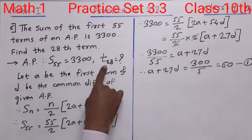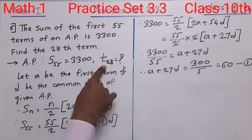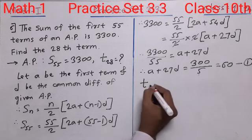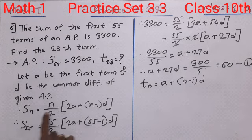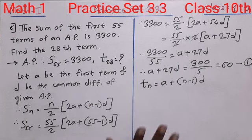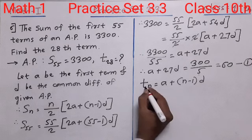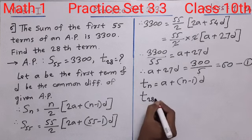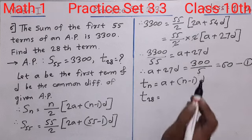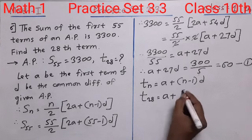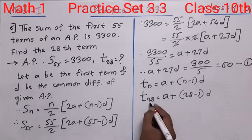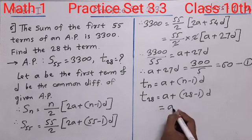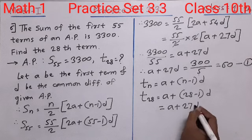Now we write the formula for TN to find T28. The formula for TN is A plus (N minus 1) into D. Substituting N = 28: T28 equals A plus (28 minus 1) into D, which gives A plus 27D.